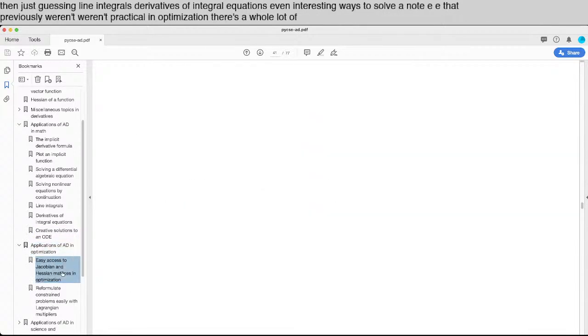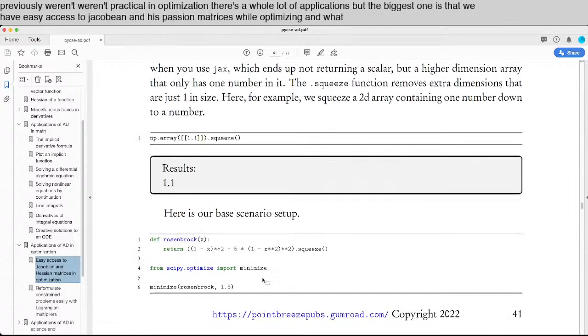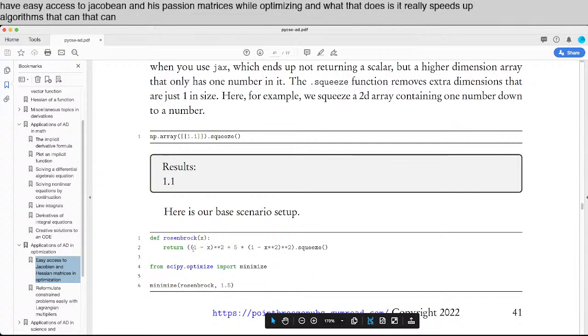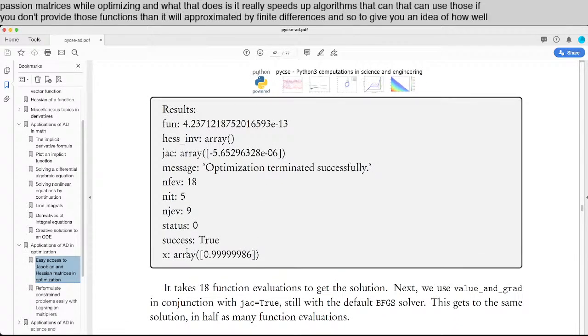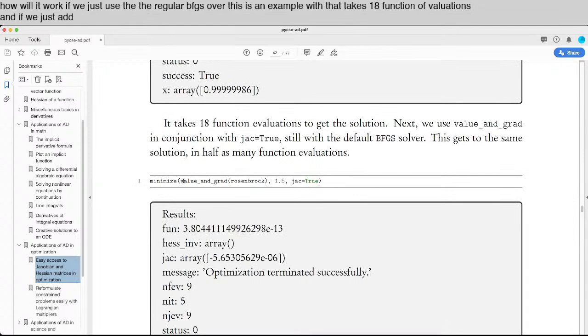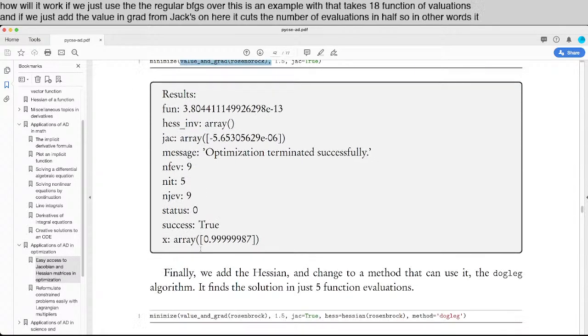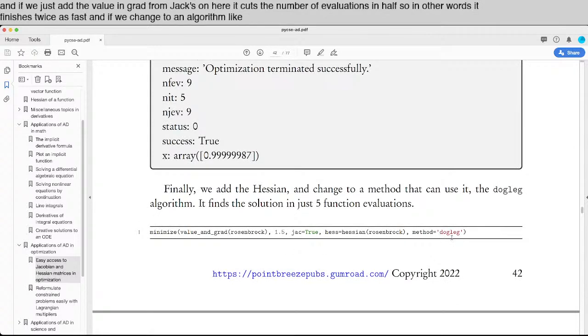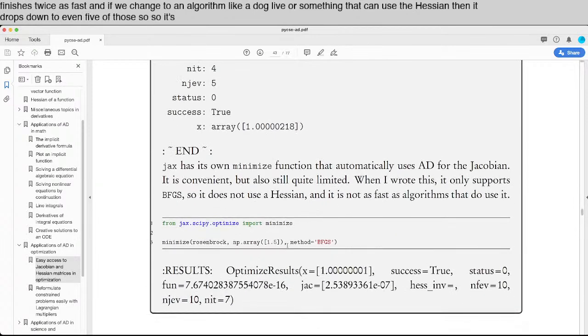In optimization, there's a whole lot of applications. But the biggest one is that we have easy access to Jacobian and Hessian matrices while optimizing. And what that does is it really speeds up algorithms that can use those. If you don't provide those functions, then it will approximate it by finite differences. And so to give you an idea of how well it works, if we just use the regular BFGS solver, this is an example that takes 18 function evaluations. And if we just add the value in grad from JAX on here, it cuts the number of evaluations in half. So in other words, it finishes twice as fast. And if we change to an algorithm like dogleg or something that can use the Hessian, then it drops down to even five of those. So it's quite convenient that you can use those.